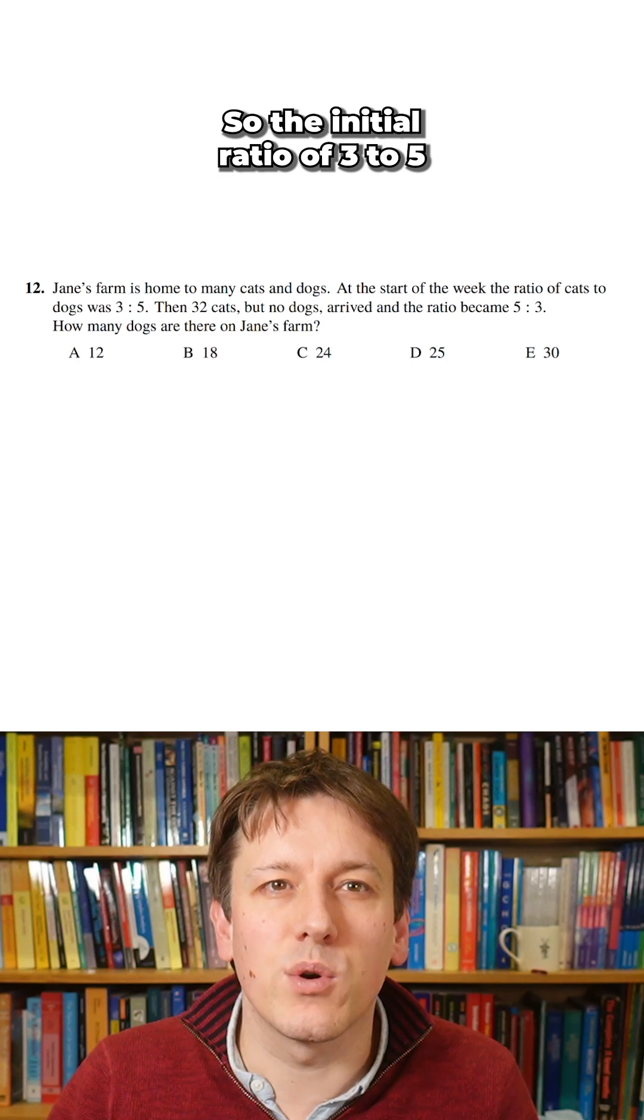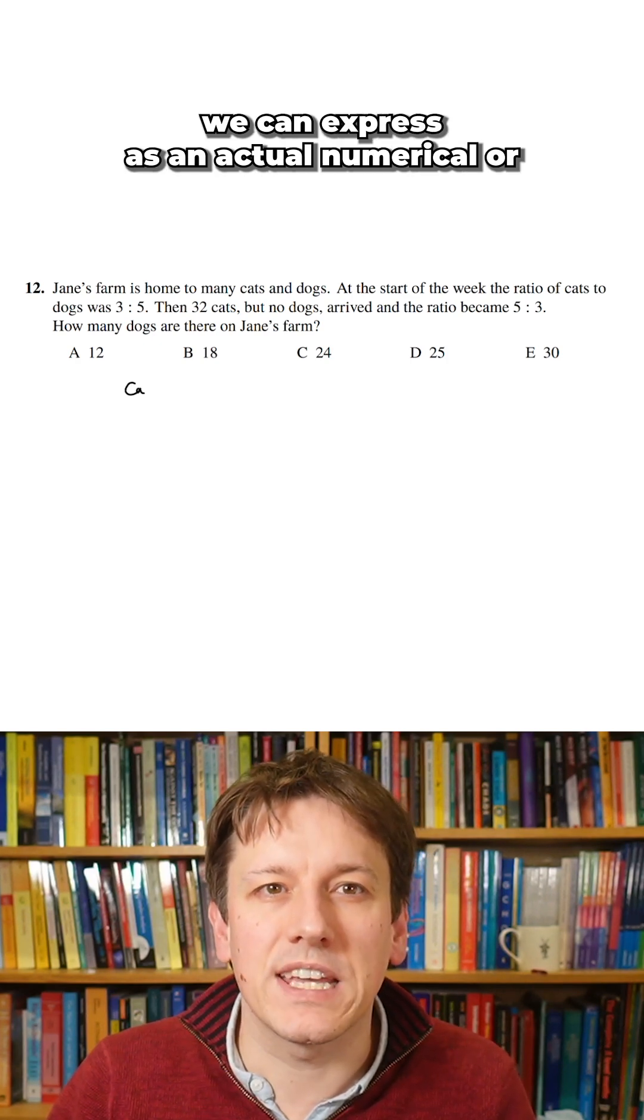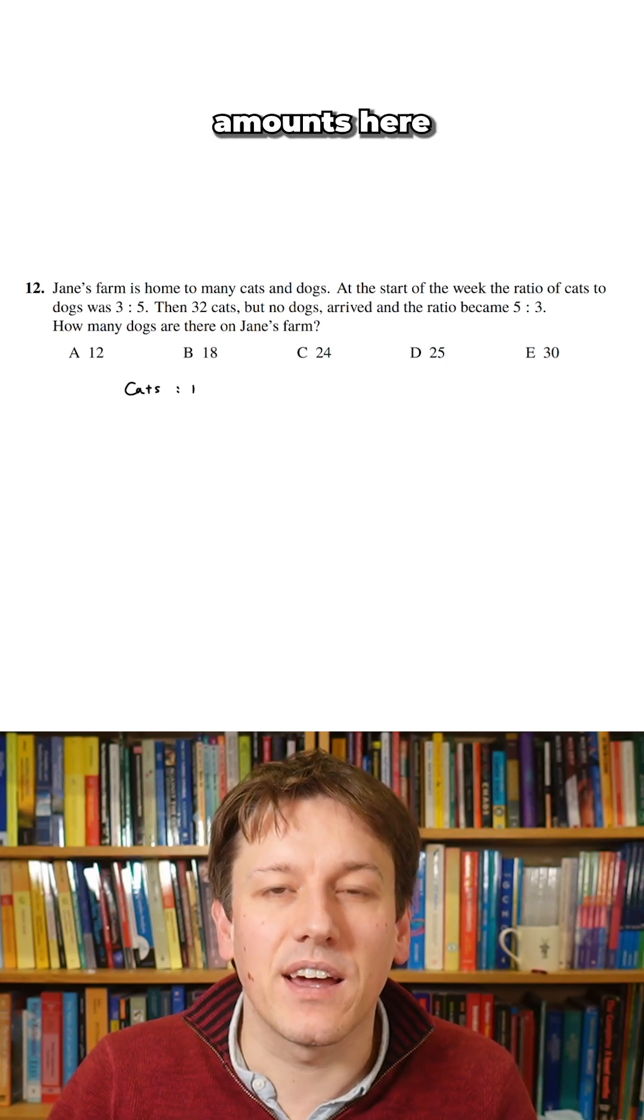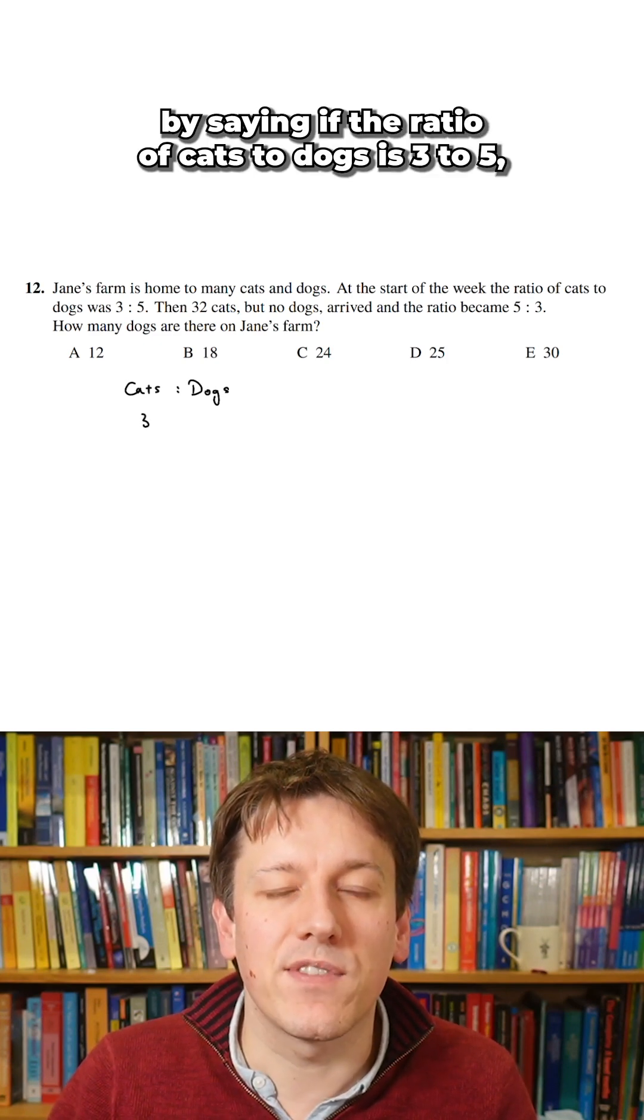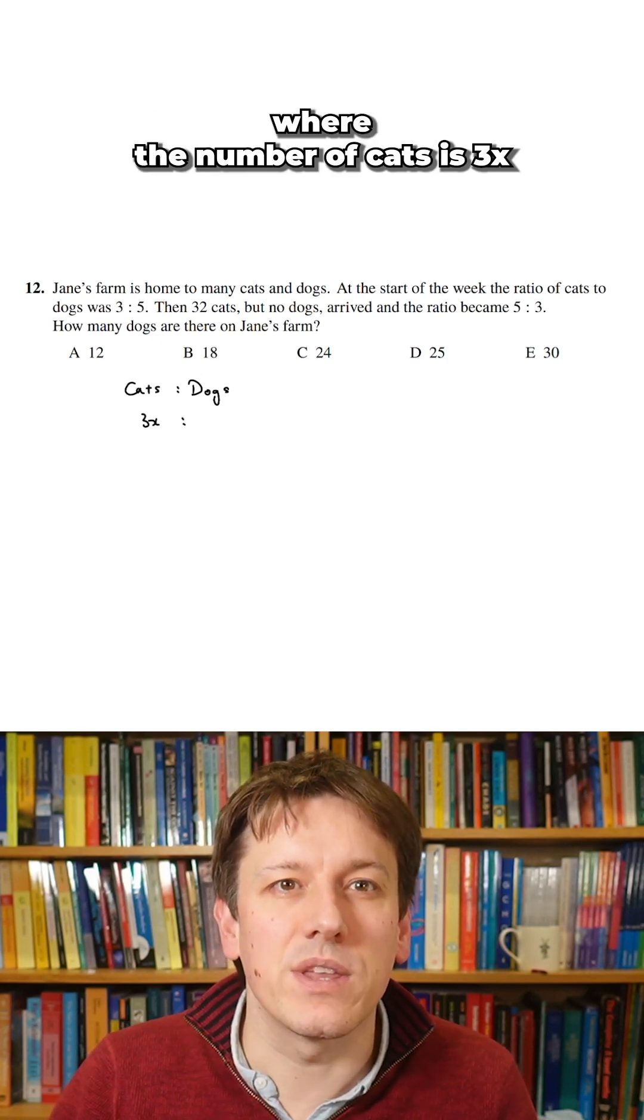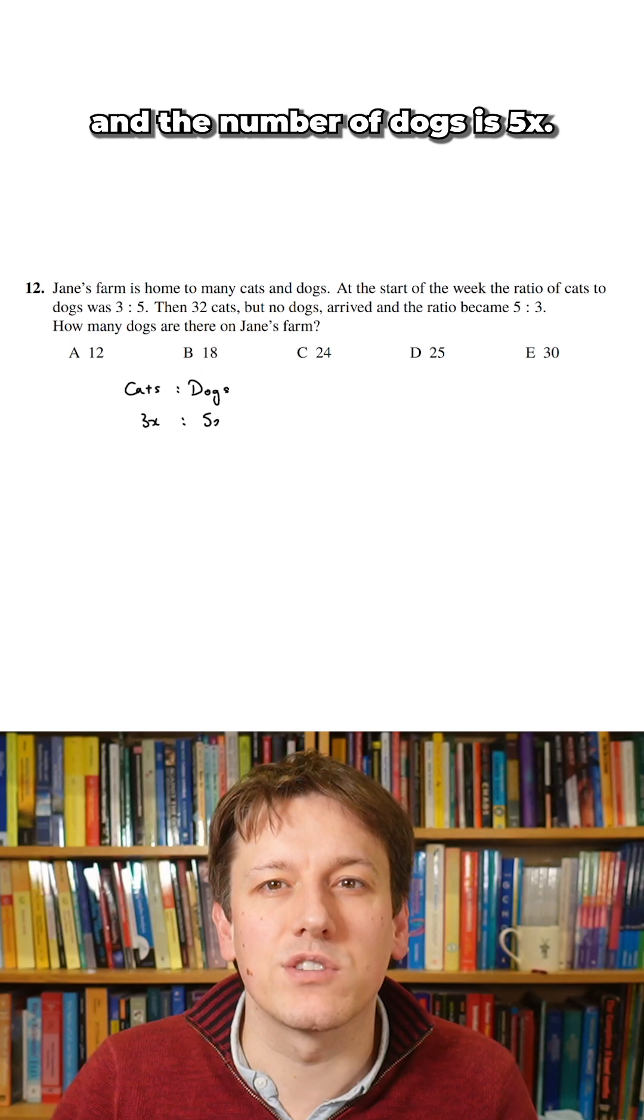So the initial ratio of three to five we can express as an algebraic amount here by saying if the ratio of cats to dogs is three to five there must be some value of x, some whole number x here, where the number of cats is 3x and the number of dogs is 5x.